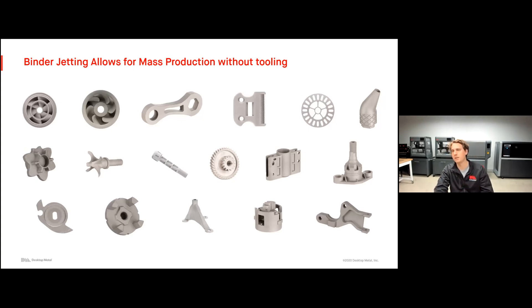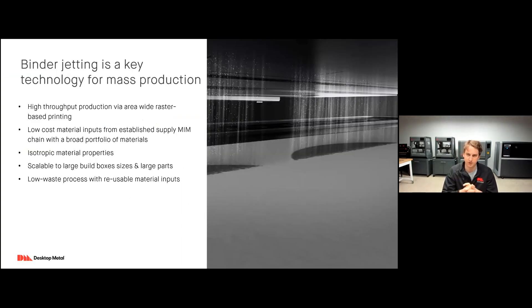One question a lot of you probably have is what makes binder jetting so great for mass production? Binder jetting has really emerged as a key technology for mass production. Why? It has this very high throughput because it uses area-wide raster-based 3D printing rather than vector-based processes that are single point. We can print entire layers of a volume, these very large volumes in just a few seconds, making it very fast to print. We use these very low cost materials from an established metal injection molding supply chain, which gives a very broad range of materials as well as material properties that are already used and expected. You get these isotropic material properties thanks to the sintering process, and then it's very scalable because you can very quickly change build box sizes and use the same technology. Very low waste, of course, because any material that's not printed can be reused and printed again.